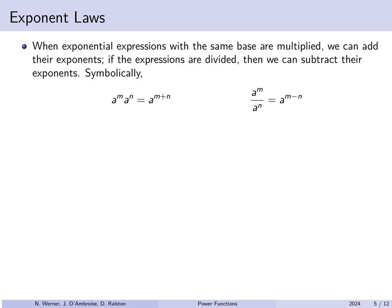When exponential expressions with the same base are multiplied, we can add their exponents. When they are divided, we can subtract their exponents. Specifically, a^m · a^n = a^(m+n) and a^m / a^n = a^(m-n). These are true provided both sides of the equal sign exist — you don't want to divide by zero, and negative exponents may hide a division, so care is needed.